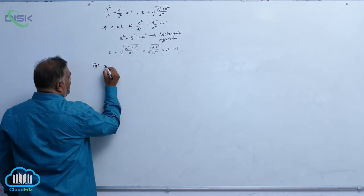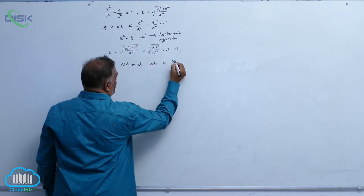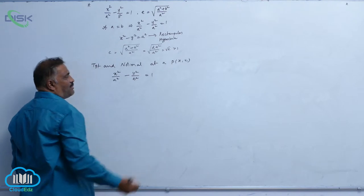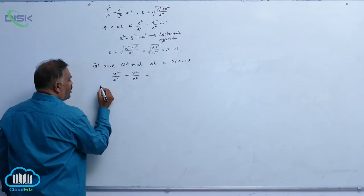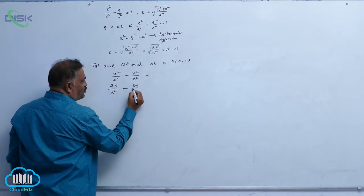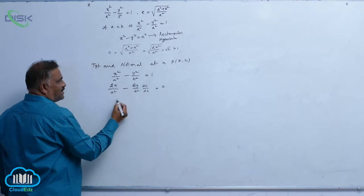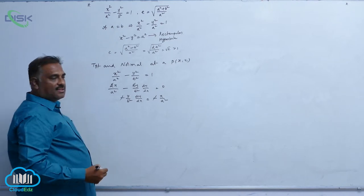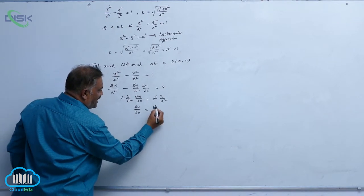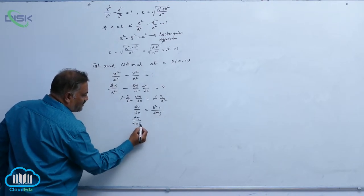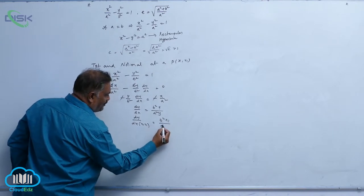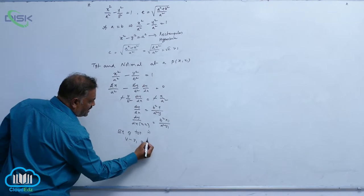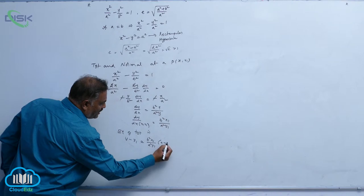Now let us consider tangent and normal at a point P(x₁, y₁). Consider x² / a² − y² / b² = 1, the standard hyperbola. Differentiate: 2x / a² − (2y / b²)(dy/dx) = 0. The 2 gets cancelled. So dy/dx = b²x / a²y. At the point (x₁, y₁), it is b²x₁ / a²y₁. The equation of tangent is y − y₁ = (b²x₁ / a²y₁)(x − x₁).